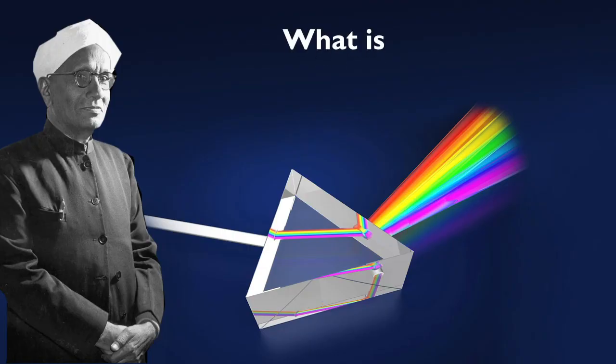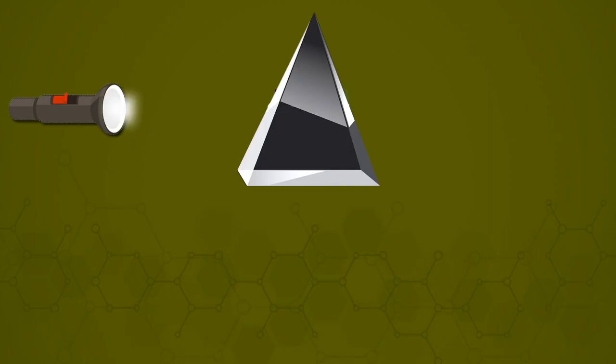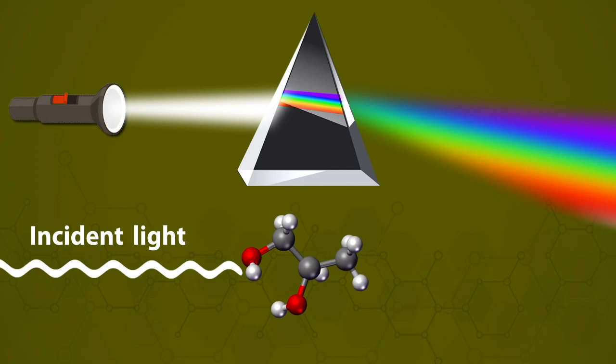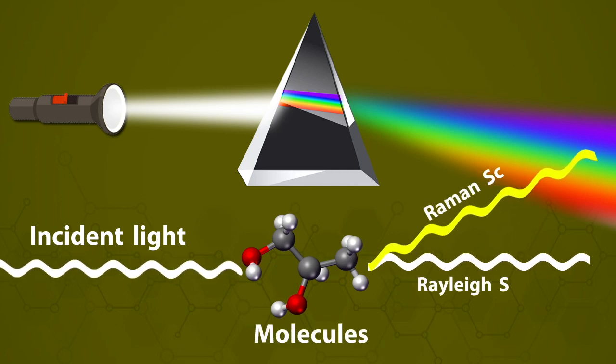Now the question is, what is the Raman effect? Raman effect is the change in the wavelength of light that occurs when a light beam is deflected by molecules. When a beam of light traverses a dust-free transparent sample of a chemical compound, a small fraction of the light emerges in directions other than that of the incident beam.